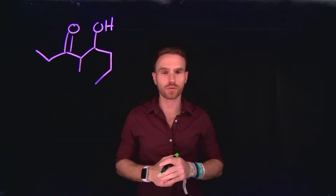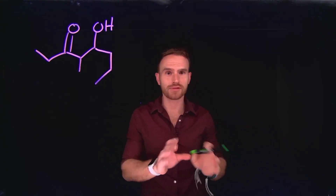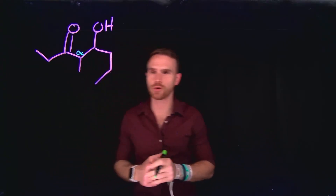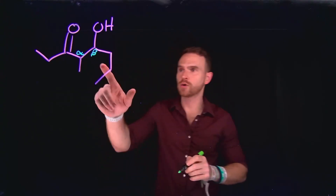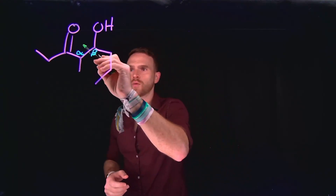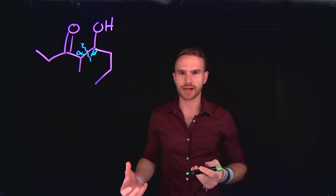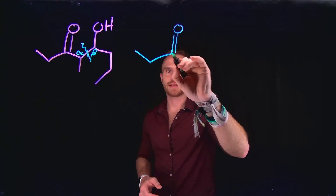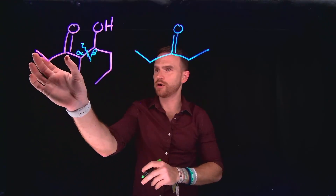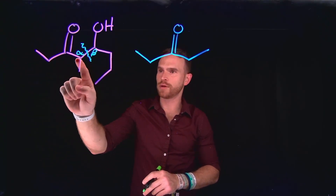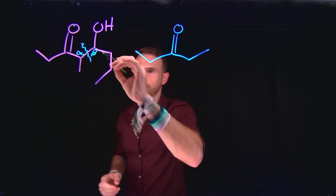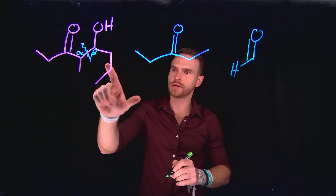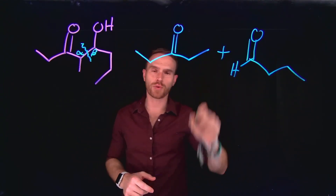Anytime we do a crossed aldol reaction — a reaction between two different carbonyl compounds that are not a homocoupling — we need to begin by identifying the alpha and beta positions. The alpha-carbon is adjacent to the carbonyl carbon, and the beta-carbon is the one that reacted, which is the carbon attached to the alcohol. From here, we can identify where the new bond has been formed. Looking at the left-hand side of the molecule, the species that performed this interaction is a ketone. On the right-hand side we are left with two carbons, and the part from the beta side has a carbonyl carbon attachment followed by three carbons. These are the reactants that must have reacted.